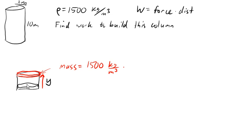Looking at this, we know that the radius of the entire column is 2 meters, so the radius of this slice is 2 meters as well. So the surface area would be pi times the radius squared, and then the thickness here to make it into a volume, the thickness here is some little change of y.